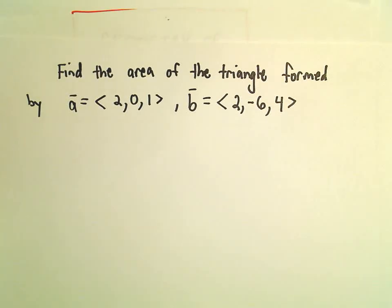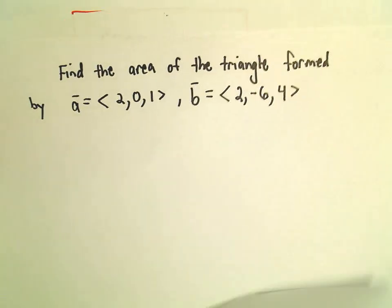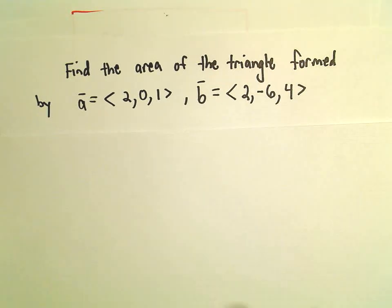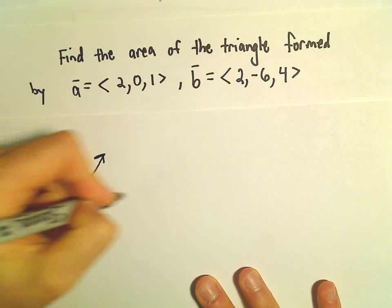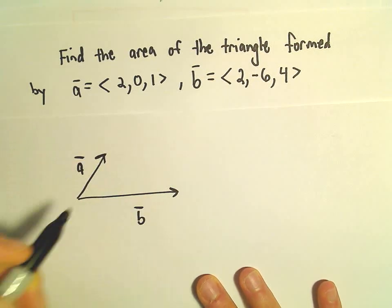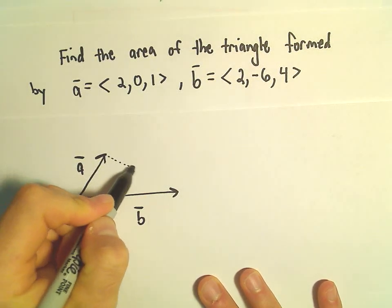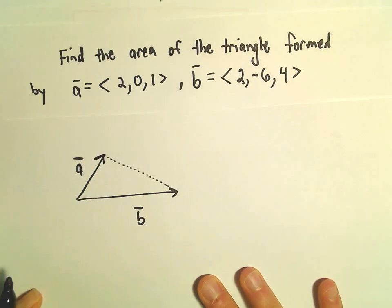So the basic idea here. Again, we've got some vector A. We have some vector B. The idea again is we want the area of the triangle formed by those two vectors.